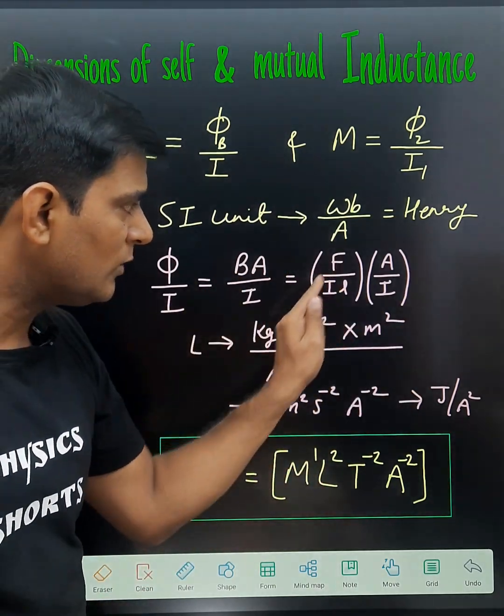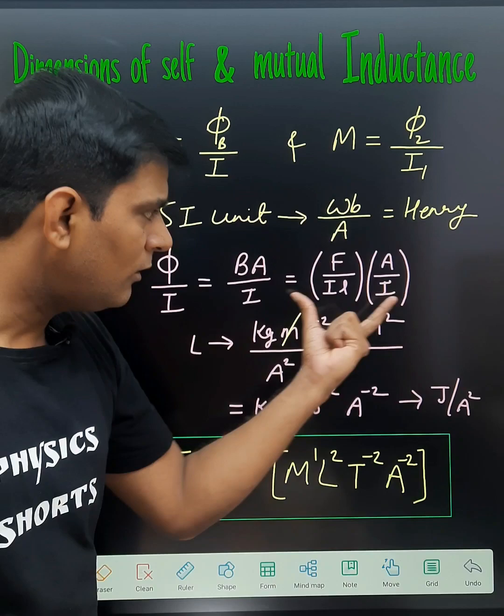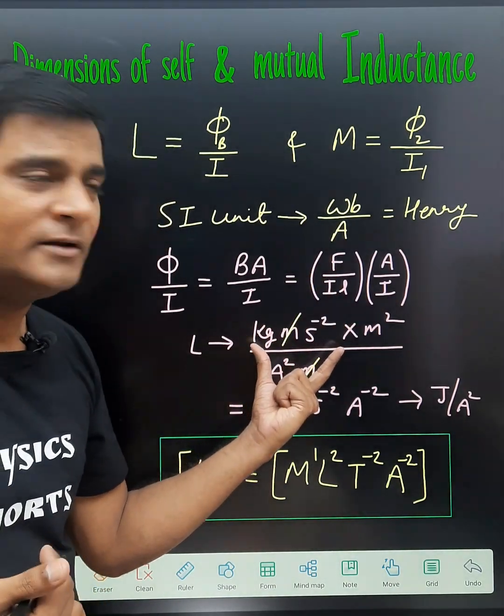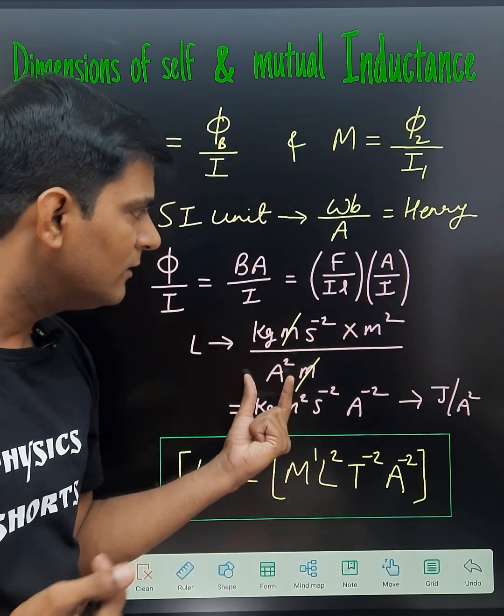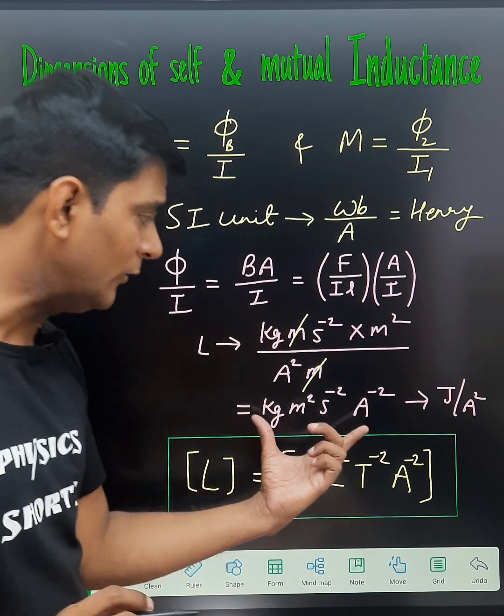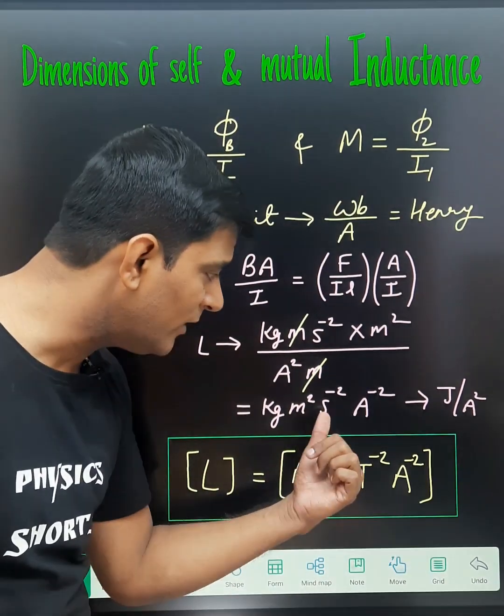When we solve or write the dimensions of each quantity: force is kg·m/s², area is m², current squared I² is A², and length is in meters. So we get the final unit = kg·m²/s²/A².